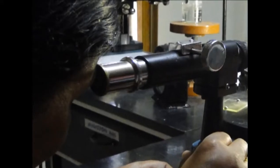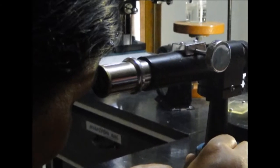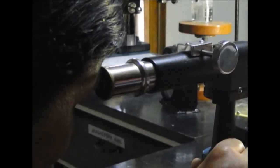Cross hairs located in the focal plane of the objective lens provide a precise means for locating the direction of these rays.